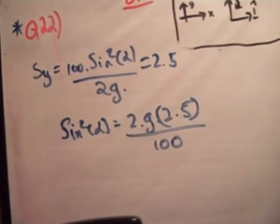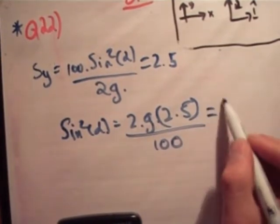So that means that sine squared is equal to 2 times 9.81 multiplied by 2.5 divided by 100. That's equal to 0.49, which is equal to half.